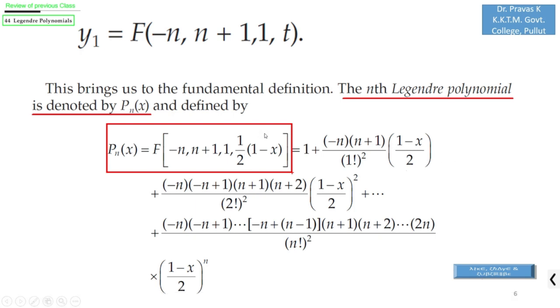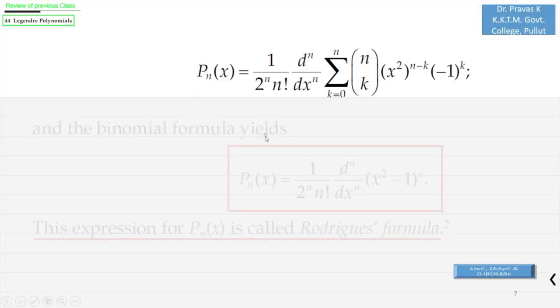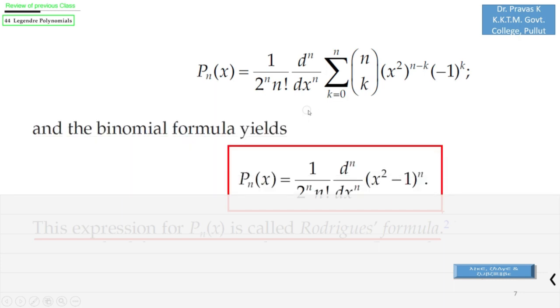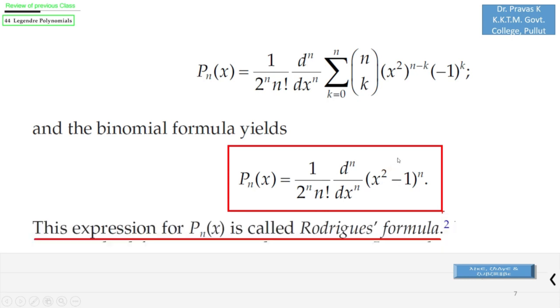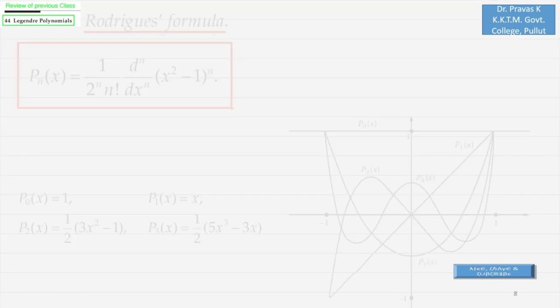Now we could see in the previous chapter that this Pₙ(x) actually takes the form as in this expression. And once again applying the binomial formula, we can see that Pₙ(x) is actually (1/2ⁿ)·(1/n!)·(dⁿ/dxⁿ)[(x²-1)ⁿ]. This expression of Pₙ(x) is called Rodriguez formula.